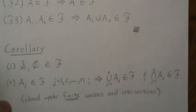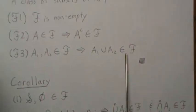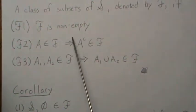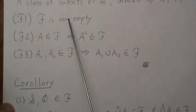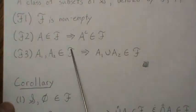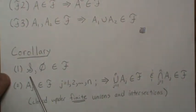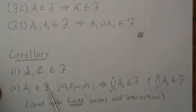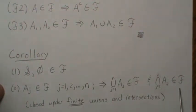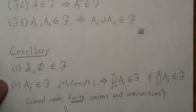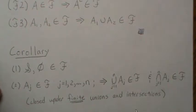There is a corollary from these three assumptions. Given just those three, these next two are also implied: S and the empty set are in F. And also, if we have n sets in F, then we know their finite union is in F, and we also know their finite intersection is in F. This is called being closed under finite unions and intersections. This is a field.